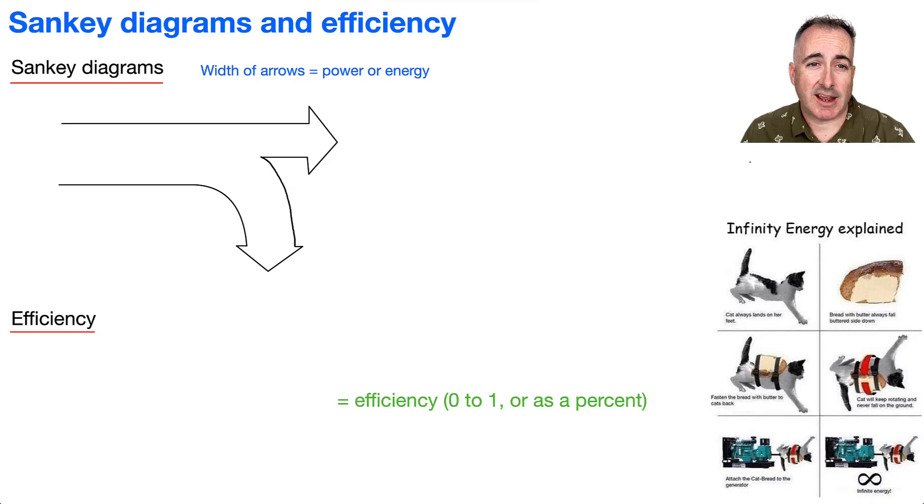We're going to be talking about Sankey diagrams and efficiency and energy. I like this one here, infinite energy explained. If you can't read it, a cat always lands on her feet, but bread with butter always falls on the butter side down. So of course, fasten the bread with butter to the cat's back. The cat will keep rotating and never fall on the ground. Then you attach the cat bread to the generator, and that looks painful, and it'll spin around infinite energy. That's a bit ridiculous.